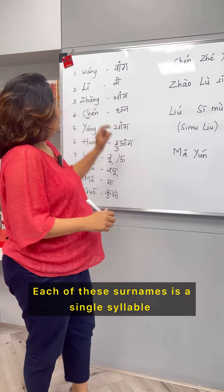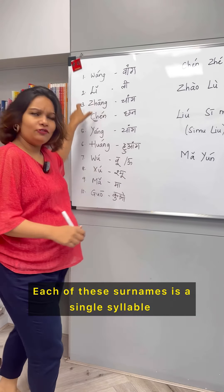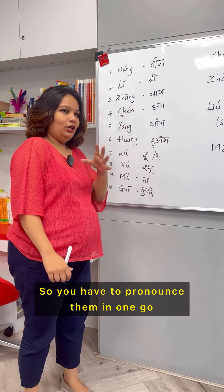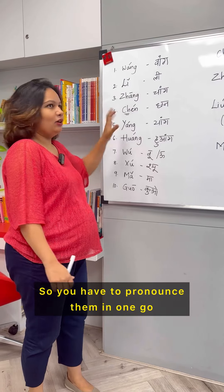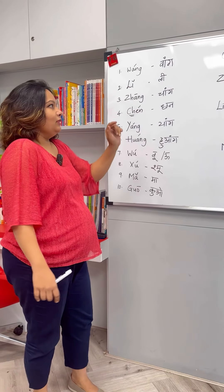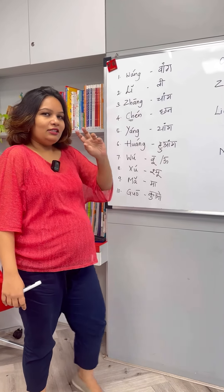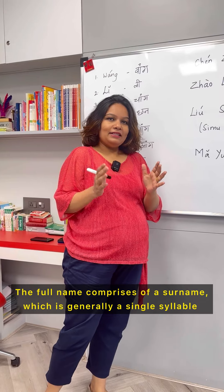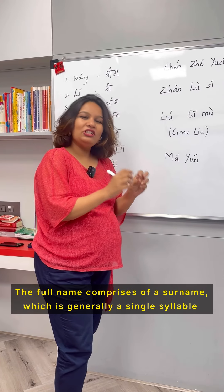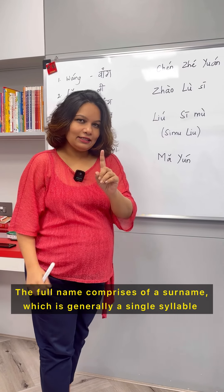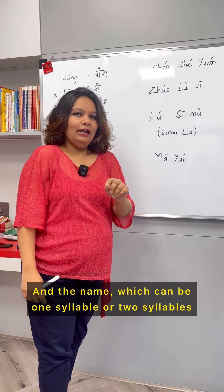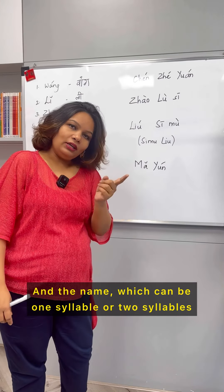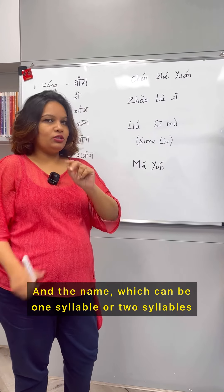So each of these surnames are single syllables, so you have to pronounce them in one go. The full name comprises of a surname, which is generally a single syllable, and the given name, which can be one syllable or two syllables.